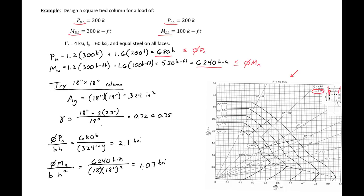Coming to our plot, we look for the 1.07 point on the x-axis. We can see that we're outside the bounds of our current curve, so we need to increase the size of our column. That's what we'll do in the next step.